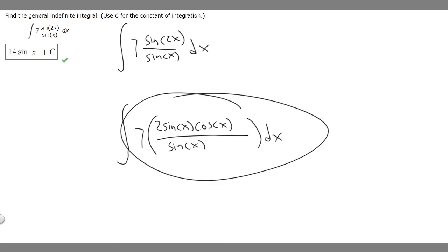Now you see we can cross out the sin(x). So it becomes the integral of 7 times 2 times cos(x), right? The sin(x) just goes away. Then we multiply 2 and 7 to get 14 times cos(x) dx.